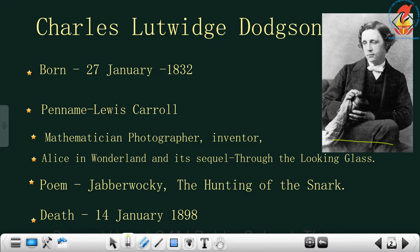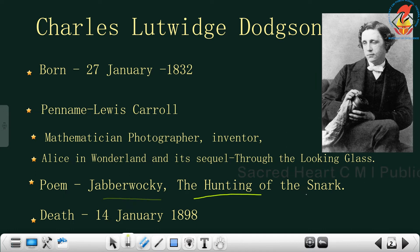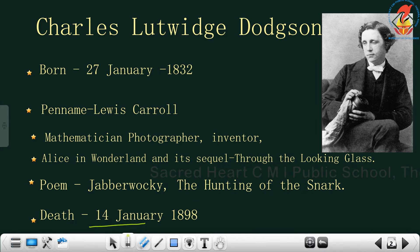You can see the picture here where he is holding a photograph machine — that has a camera or it could be a lens also. That is the picture of Charles Lutwidge Dodgson. His famous works are Alice in Wonderland and also its sequel, Through the Looking Glass. He has also written poems and the famous poems are Jabberwocky and The Hunting of the Snark. He died on 14th January in the year 1898.